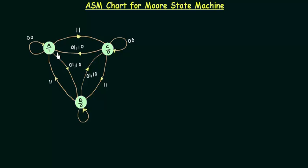In Mealy, the output is a function of the present state as well as the input, but in the Moore state machine the output is a function of only the present state, not the input. That's why we write the output inside the circle, and we will try to develop the ASM chart for this state diagram. The ASM chart is an advanced version of this state diagram.